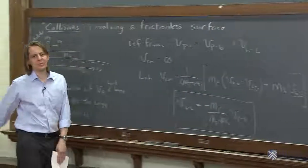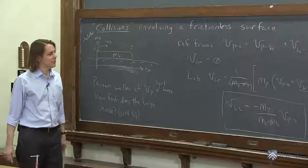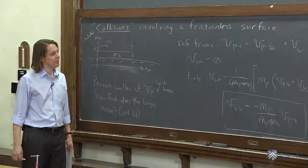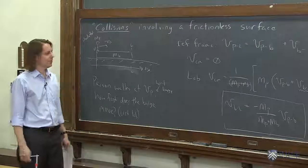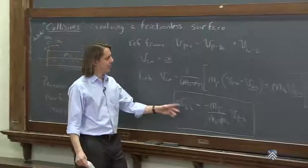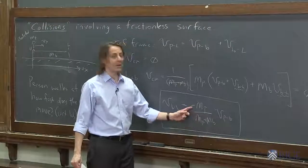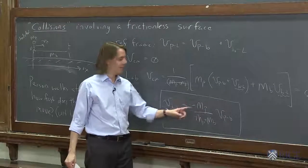And just like the position, we can now check, does this make sense? If the person is really light, if you're walking on an aircraft carrier, then basically the barge's recoil velocity will be negative. It should be, right? We know that the barge moves backwards, but it'll be really small. If this is my mass and that's an aircraft carrier, then essentially nothing.